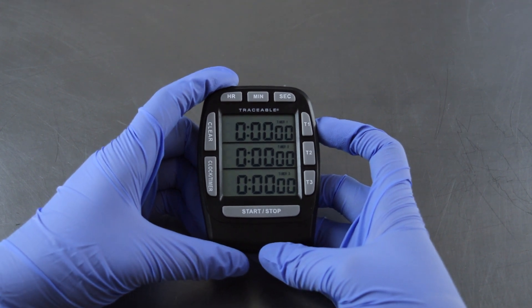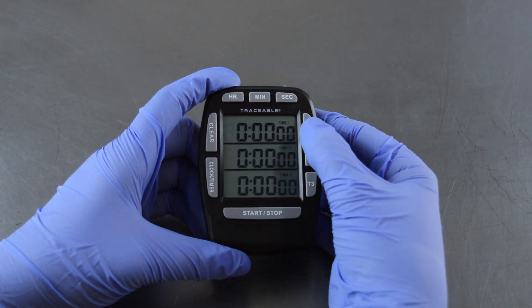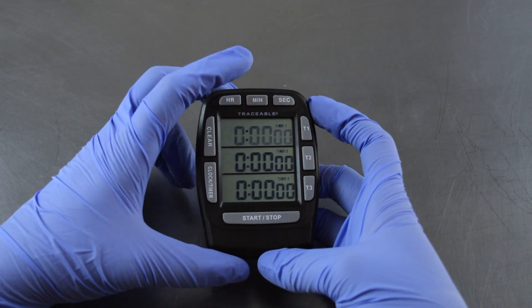To begin, press and hold T1 on the upper right hand side of the timer. Once it begins flashing, you can set the desired time.